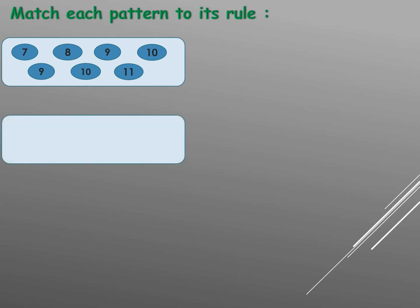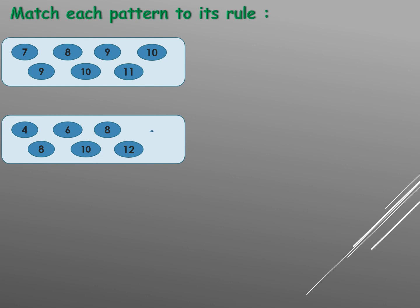Second one: four, eight, six. Four reaches eight — plus four. Then eight minus two equals six. Six plus four equals ten, ten minus two equals eight, eight plus four equals twelve, twelve minus two equals ten. The rule is plus four, minus two.